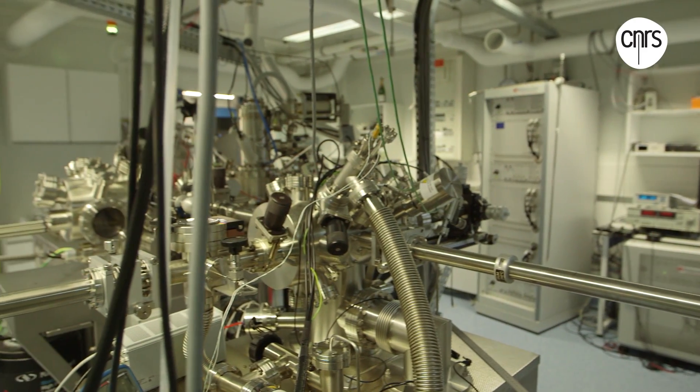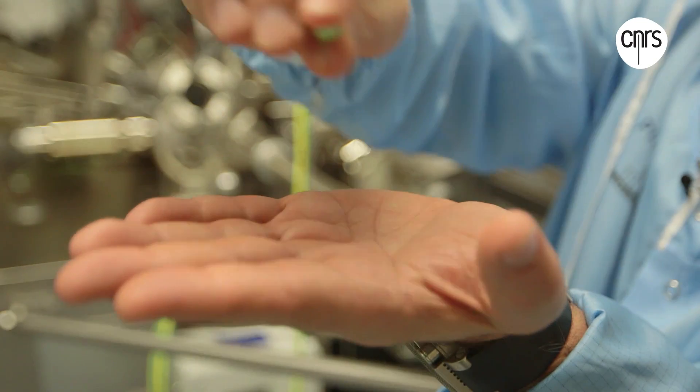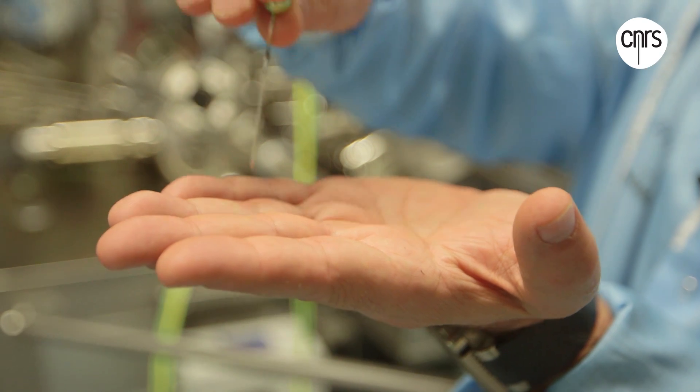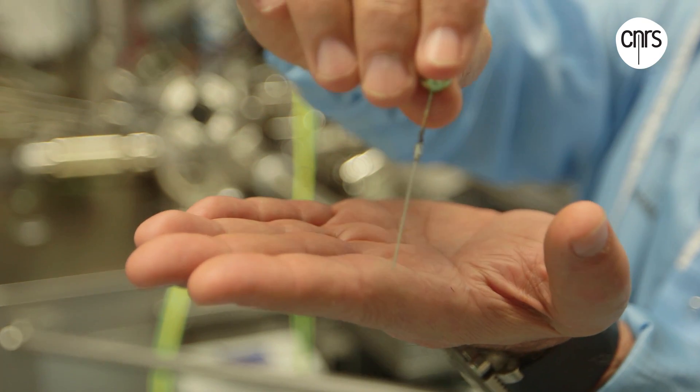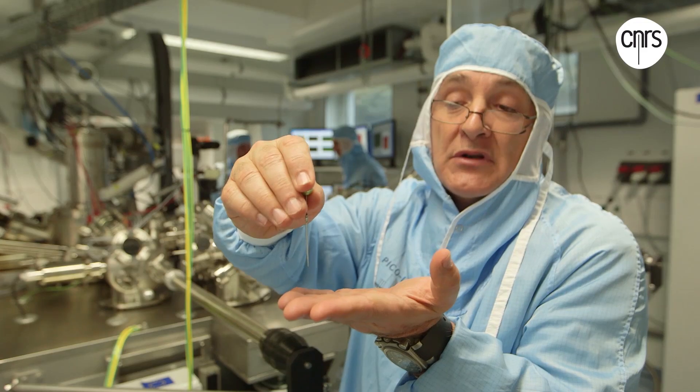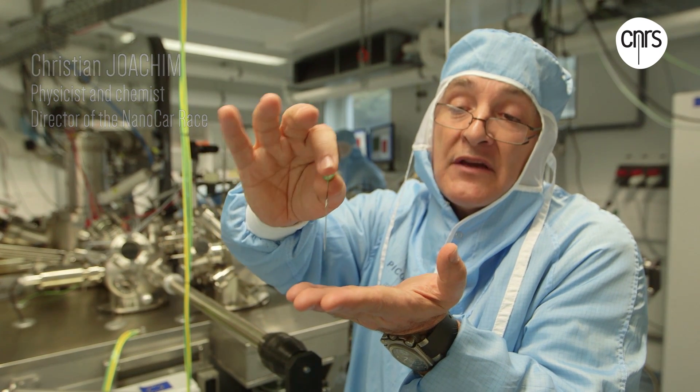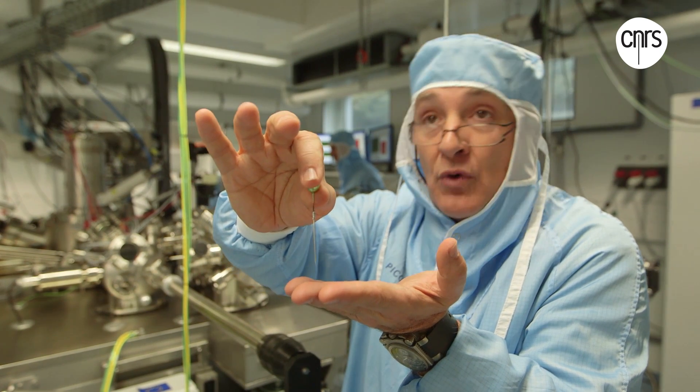The tunneling microscope works like this. You have a small tip which you slowly move towards the surface, here it's my hand. You maintain a small voltage difference between the tip and the surface. As you move it closer at one point when the tip is very near the surface, less than a nanometer, a tiny current will appear between the point and the surface.